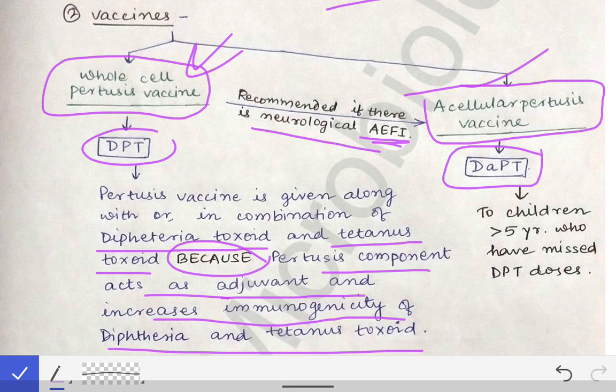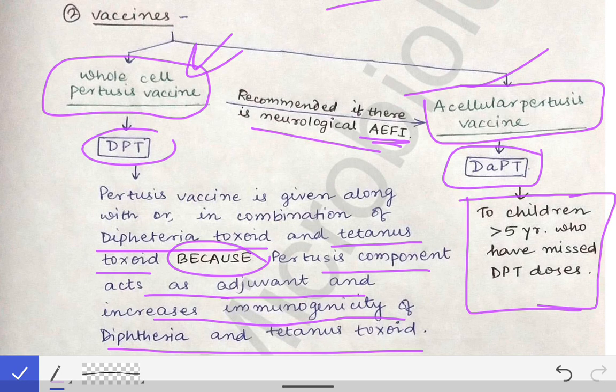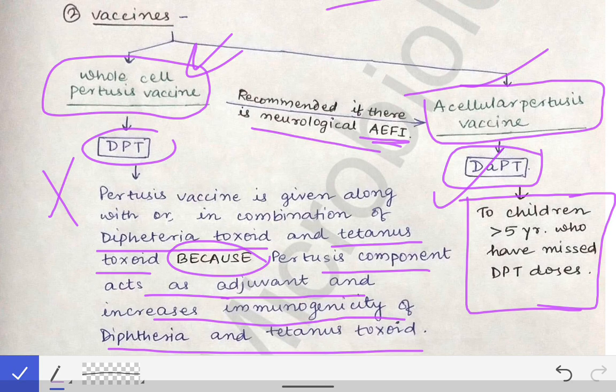For the acellular pertussis vaccine, an important indication is for children over five years of age who have missed DPT doses. DPT doses are normally given up to five years of age, but if doses were missed, after five years they should not be given DPT — they should be given DaPT. So the two indications for acellular pertussis vaccine are: children over five who missed DPT doses, and children showing neurological AEFI to the whole cell pertussis vaccine.